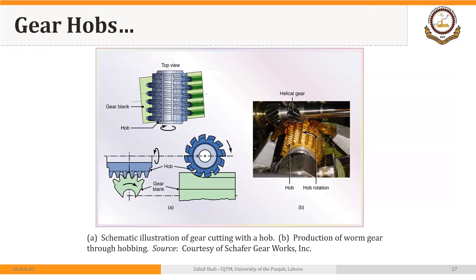In a way, gear hobbing is similar to milling because the cutter rotates. This is the cutter — it is rotating — and this is the blank. Here we are making a helical gear, so according to the angle required on the helical gear, the hobbing cutter is held onto the machine. It progressively makes gears, and you could visualize that we cannot make internal gears using a hobbing cutter. The blank as well as the hob both rotate.